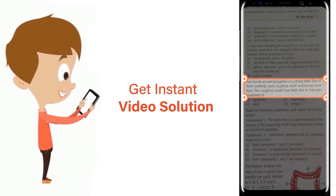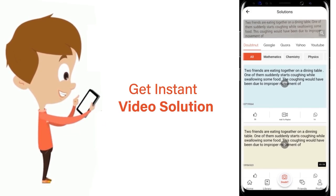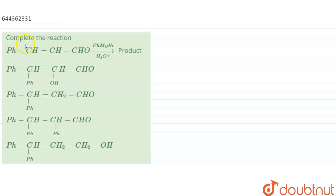The question is: complete the reaction. The reaction is Ph-CH=CH-CHO on reaction with PhMgBr, that is Grignard reagent, followed by acidification. We have to tell what is the product, and we have been given four options.